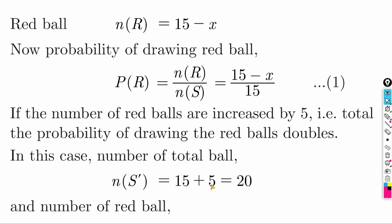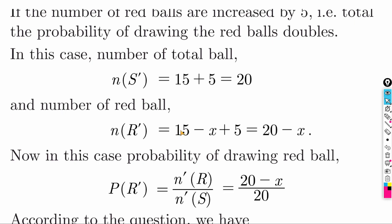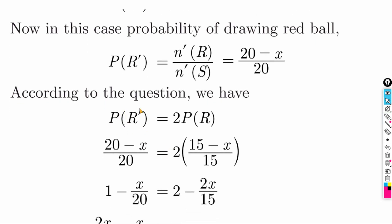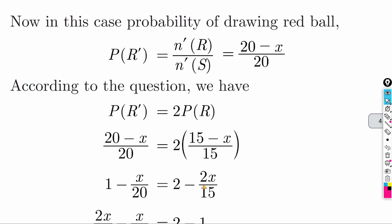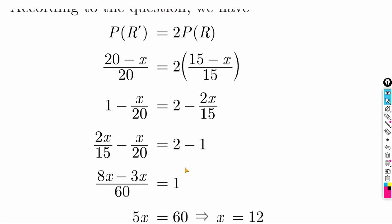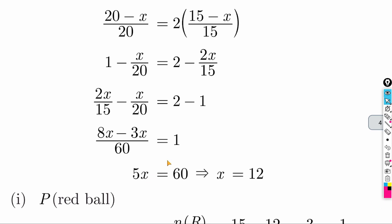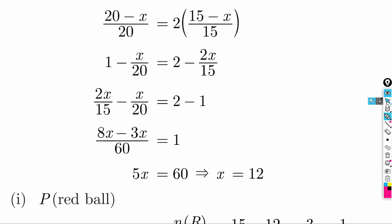Setting up the equation: (20 - x) by 20 = 2 × (15 - x) by 15. Cross multiplying: 15(20 - x) = 40(15 - x), giving 300 - 15x = 600 - 40x, so 25x = 300, then 5x = 60 (after simplification). Solving: x = 12.